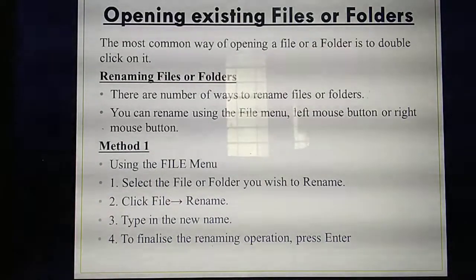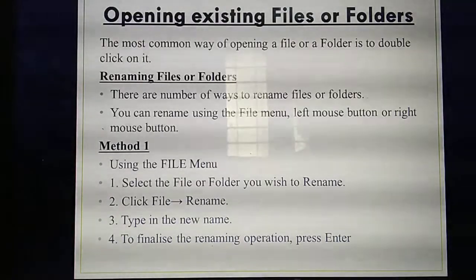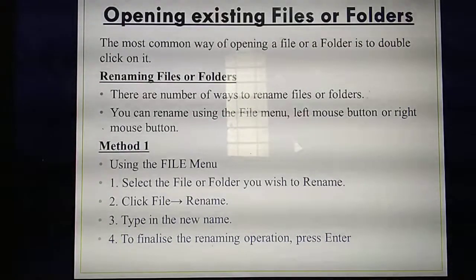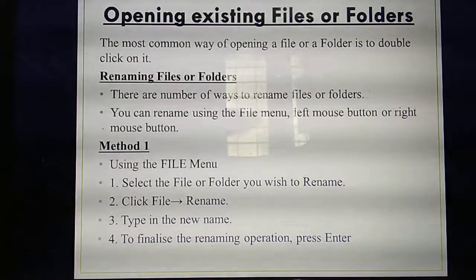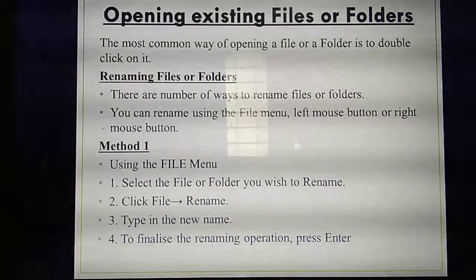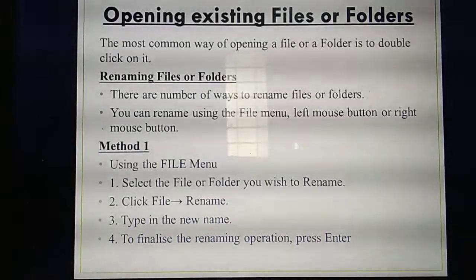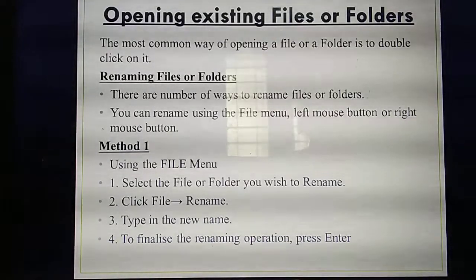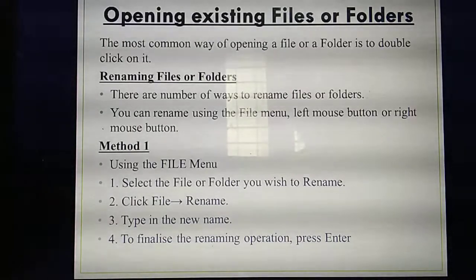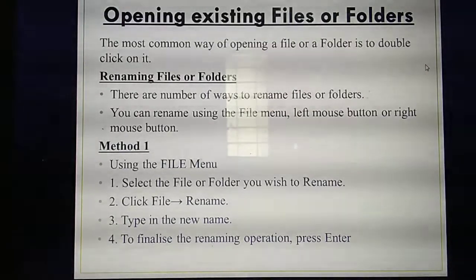Next, we are going to study about opening existing files or folders. Existing means already saved things — files already available in your computer or mobile phone. To open an existing file or folder, the simplest method is to place the mouse pointer on that file or folder and double-click it.